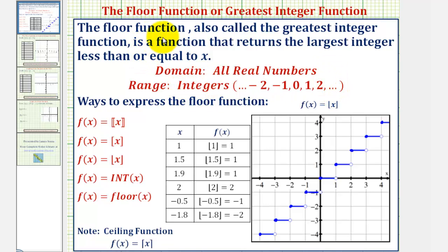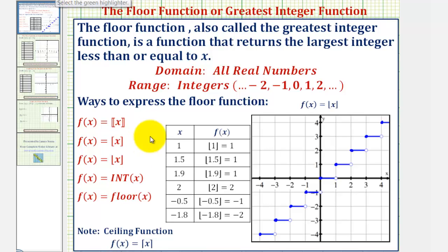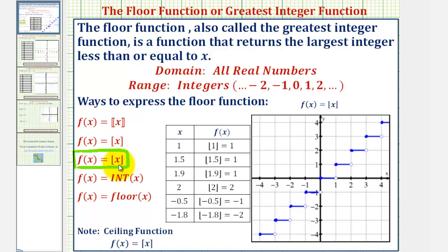There are several ways to express the floor or greatest integer function, which we see here on the left. Notice how for these first three we have different types of brackets. We can also use capital INT or the word floor. But the most common way to express the floor function would be this notation here — a pair of vertical bars with the bottom parts turned inward.